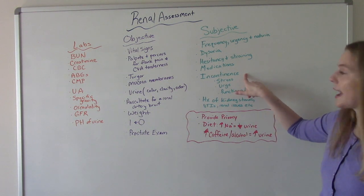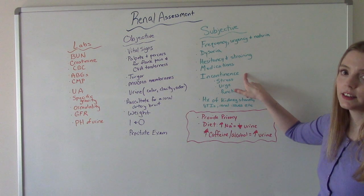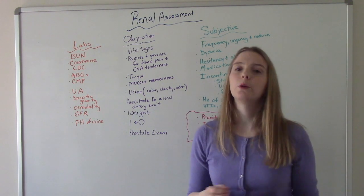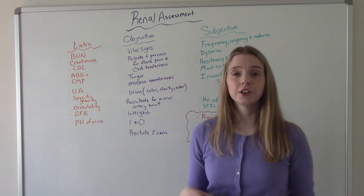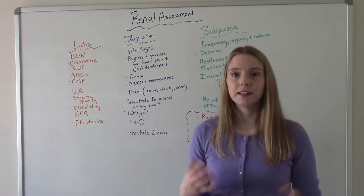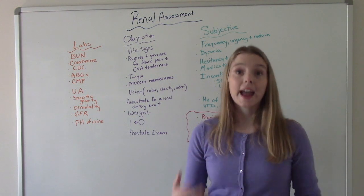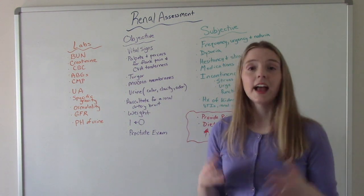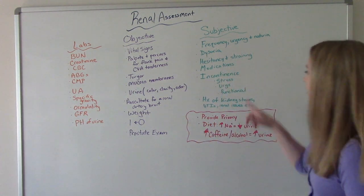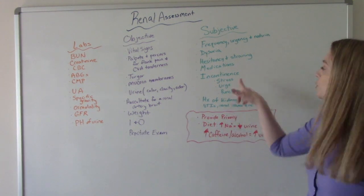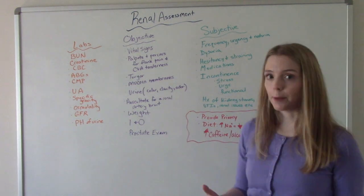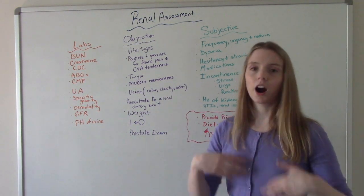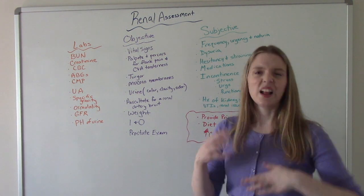Incontinence. So asking them if they've experienced any incontinence. It's very important that you know that incontinence is not a normal part of aging. Just because your patient is 85 doesn't mean that we expect them to be incontinent. So asking them, have you experienced any types of incontinence? And some examples I put on here include stress, urge and functional. So stress probably being the most common, which is where you sneeze or you laugh too hard or you cough or something like that. And then you kind of pee a little.